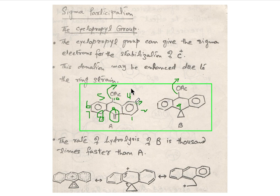So it will result into the formation of carbocation. The rate of formation of carbocation in compound B is thousand times faster than compound A.